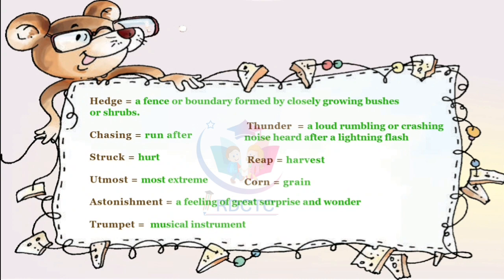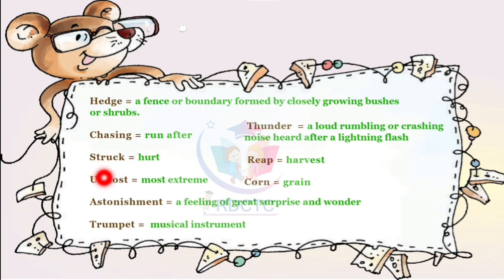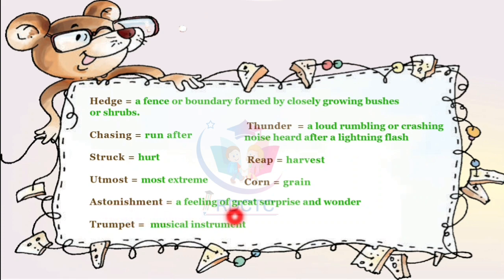Now we see the new words. Hedge means a fence or boundary formed by closely growing bushes. Chasing means run after. Struck means hurt. Utmost means most extreme. Astonishment means a feeling of great surprise and wonder. Trumpet means a musical instrument. Thunder means a loud rumbling or crashing noise heard after a lightning flash. Rip means harvest.